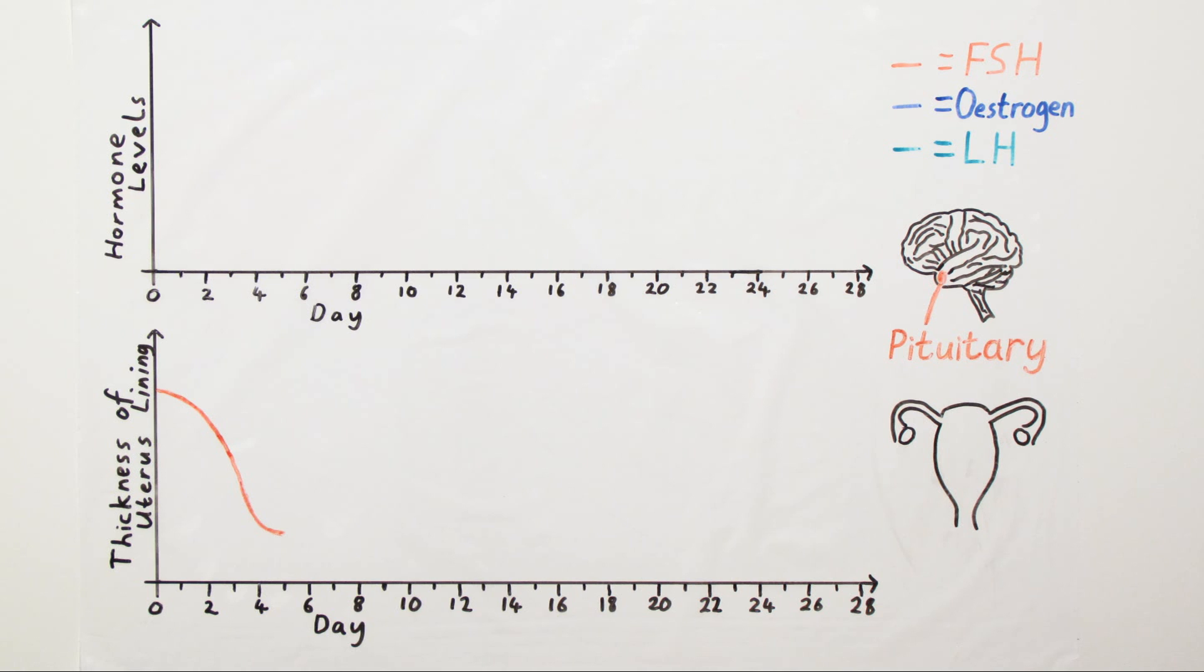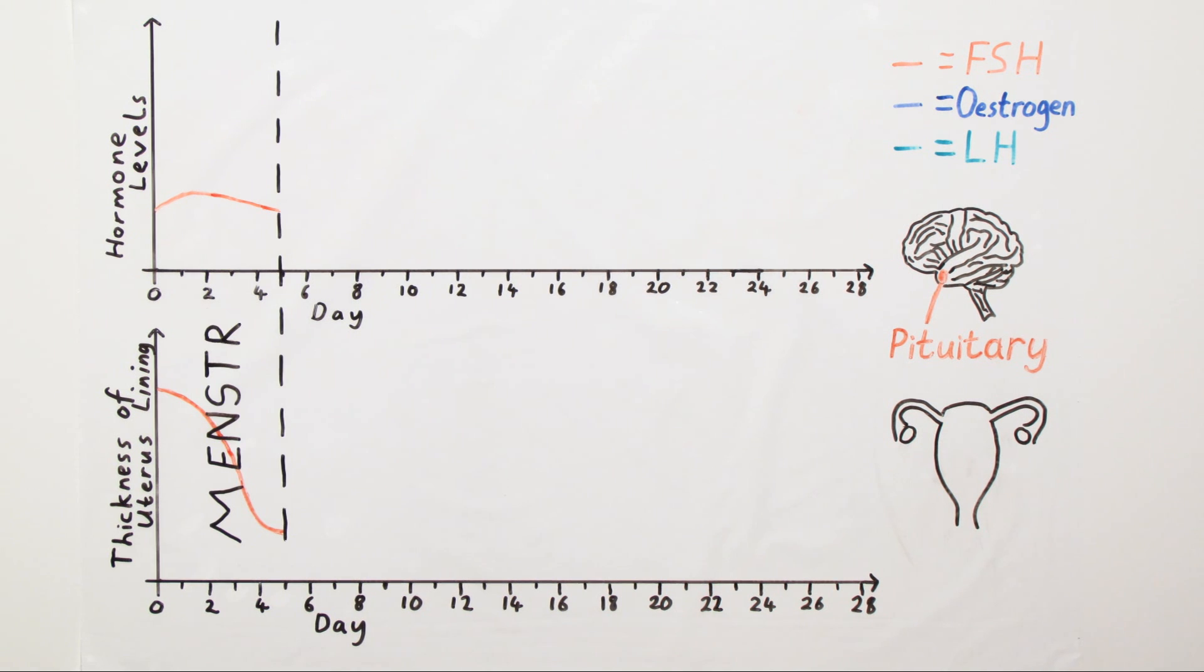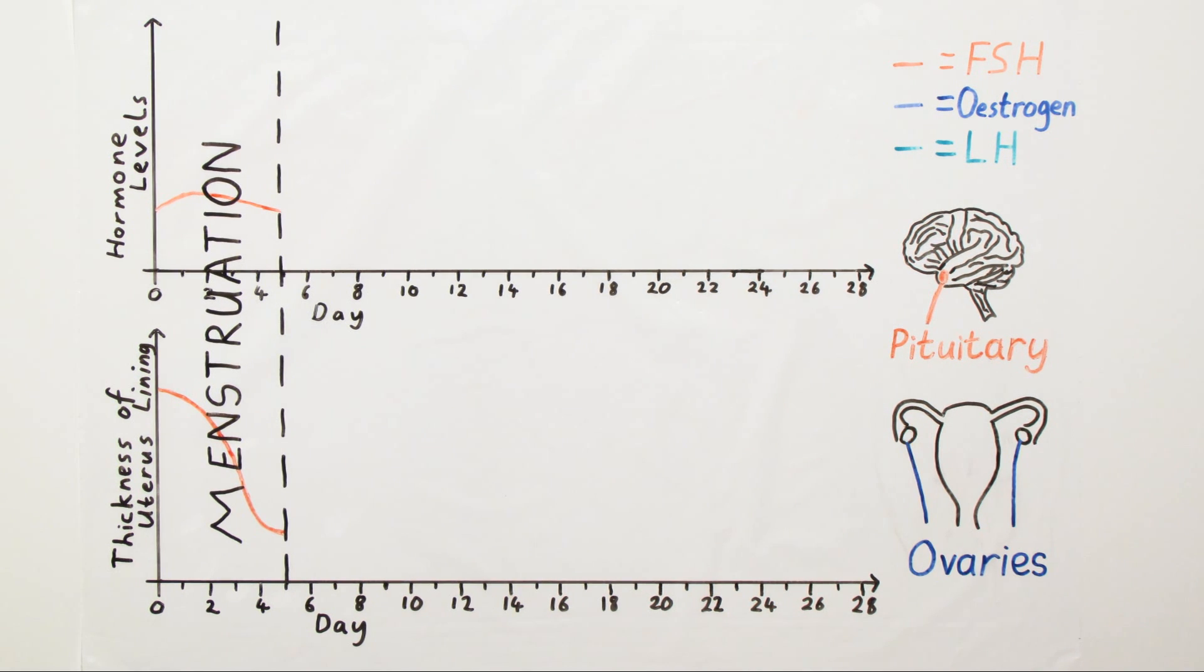At this time, known as menstruation, the level of FSH being produced by a woman's pituitary gland increases. This increase in FSH stimulates the ovaries to do two things. Firstly, a follicle within the ovaries will start to develop an egg. That egg will be maturing for the next few days.